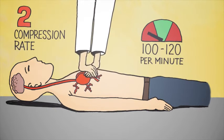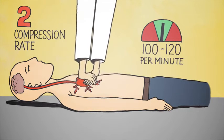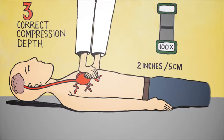The ideal compression rate is 100 to 120 compressions per minute. The correct compression depth is at least 2 inches or 5 centimeters. Less than that and you may not be generating enough blood.